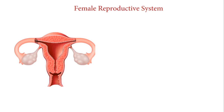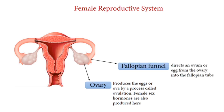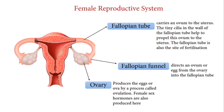Next is the female reproductive system. The ovary produces the eggs or ova by a process called ovulation; the female sex hormones are also produced here. The fallopian funnel directs an ovum from the ovary into the fallopian tube, which is also known as the oviduct and carries the ovum to the uterus. Tiny cilia in the wall of the fallopian tube help to propel this ovum to the uterus.